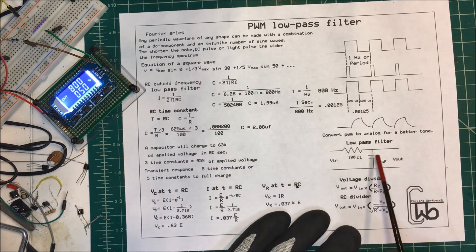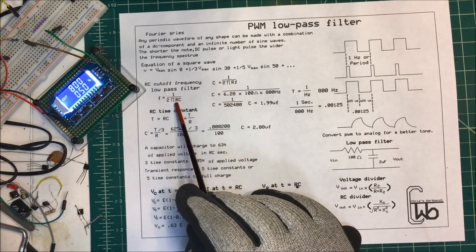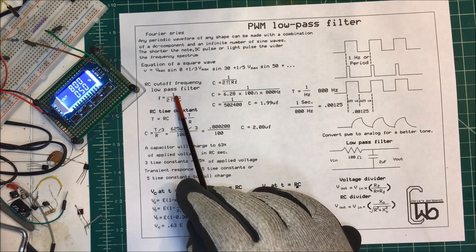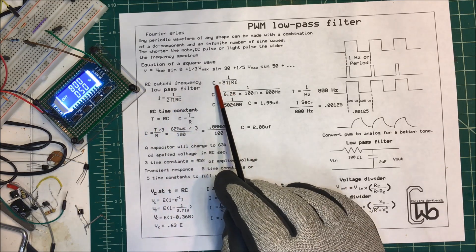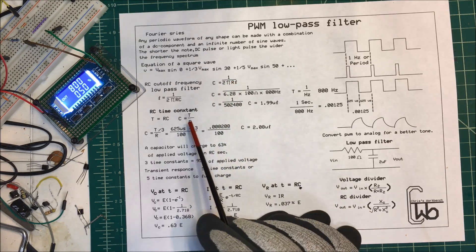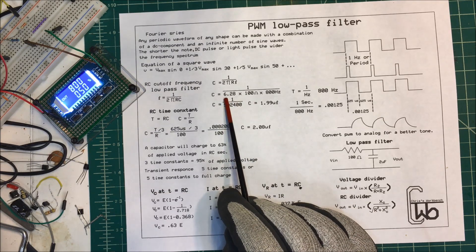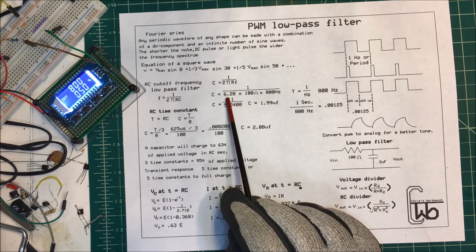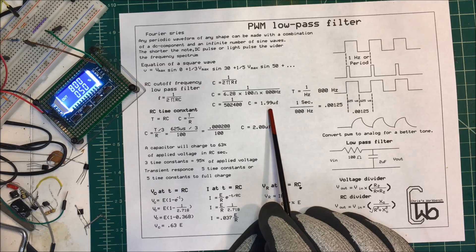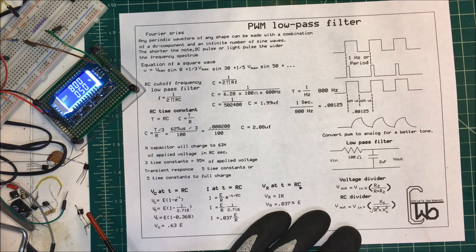To make the low-pass filter, we use this formula here. We know that F is equal to 1 over 2 pi RC. So we want to find C here. We use this formula, C equals 1 over 2 pi RF. We're going to pick 100 ohms and 800 hertz and this 2 pi. If you calculate that out, it comes out to about 1.99 microfarads, so 2 microfarads.